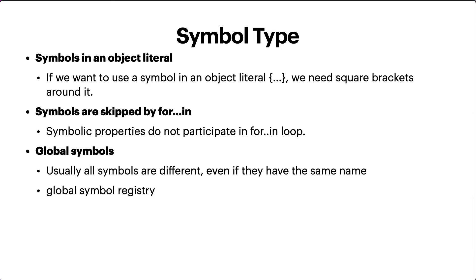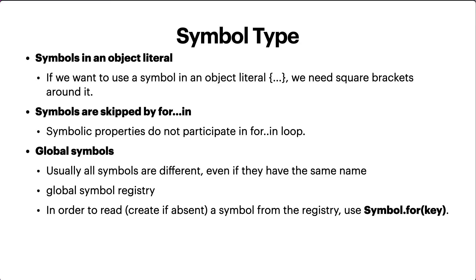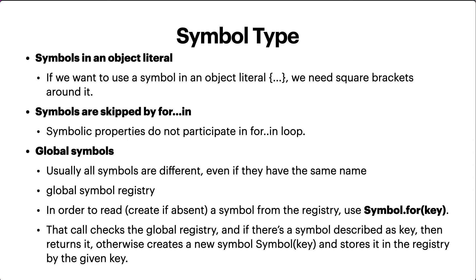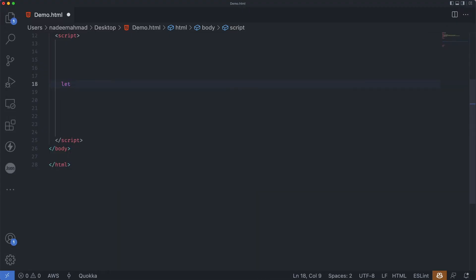We can create symbols in the global registry and access them later, and it guarantees that repeated accesses by the same name return exactly the same symbol. In order to read or create a symbol from the registry, we use Symbol.for(key). That call checks the global registry — if there's a symbol described as that key, it returns it; otherwise it creates a new symbol with that key and stores it.